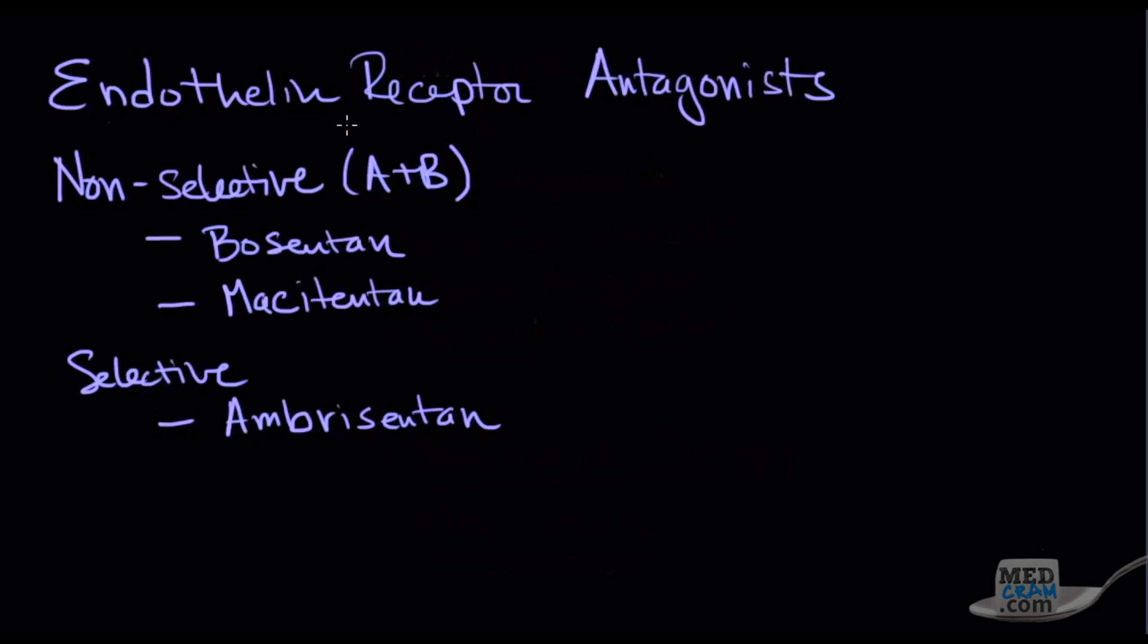The next group are the endothelin receptor antagonists. Endothelin-1 is a hormone that basically circulates around and is an extremely potent vasoconstrictor. If we could possibly block these receptors, potentially we could get some vasodilation. There are two types of receptors, the A and B. Bosentan and macitentan are drugs that block these receptors. They're non-selective and they seem to reduce the PA pressures. They also improve the quality of life, extend the length of time before decompensation, and increase exercise capacity. One of the selective ones is ambrisentan.